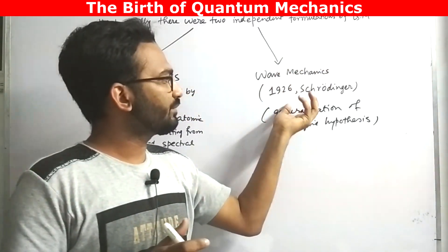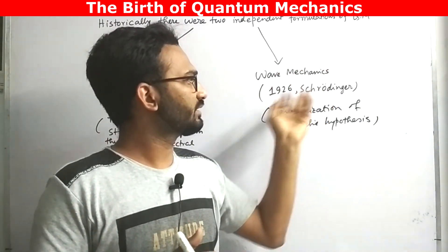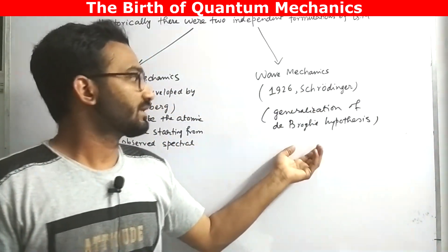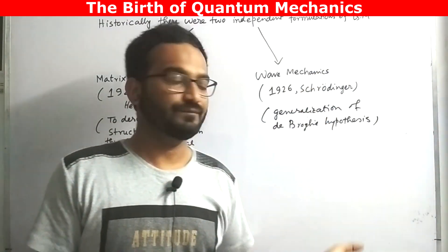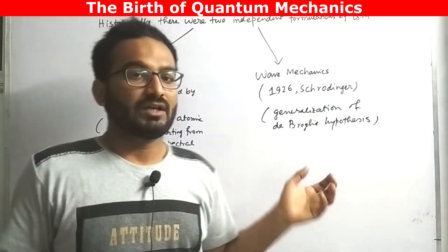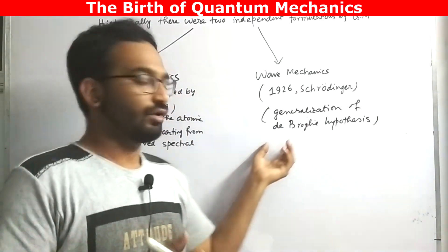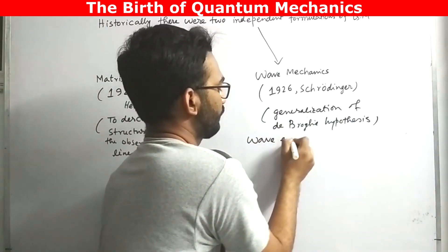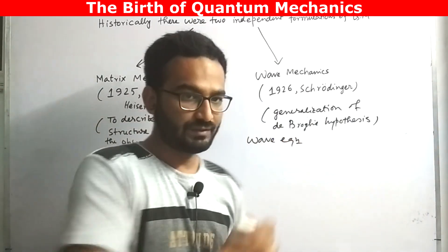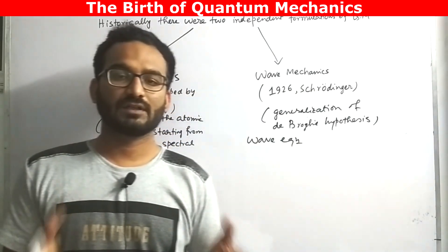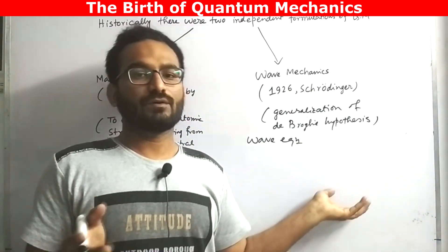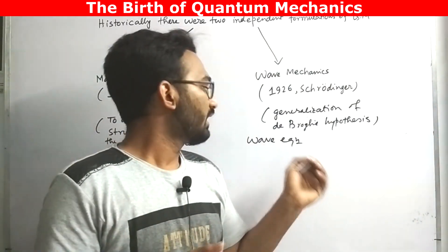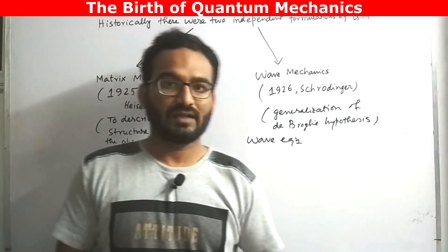In case of wave mechanics, this wave mechanics was founded by Schrödinger in 1926. And this was the generalization of de Broglie hypothesis. In this formulation, Schrödinger describes the motion of the microscopic object in the terms of some wave equation, which is popularly known as Schrödinger equation. It is basically a differential equation. And the solution of this second order differential equation gives you the wave function and the wave vector as well.